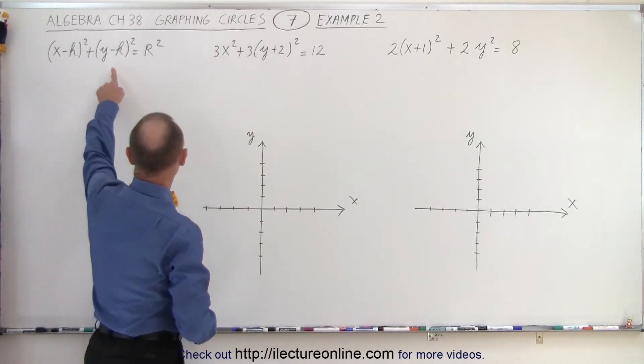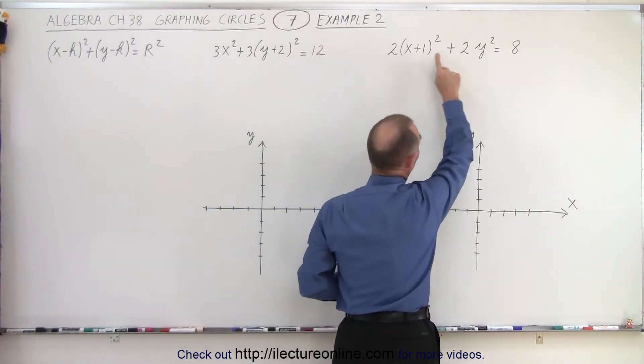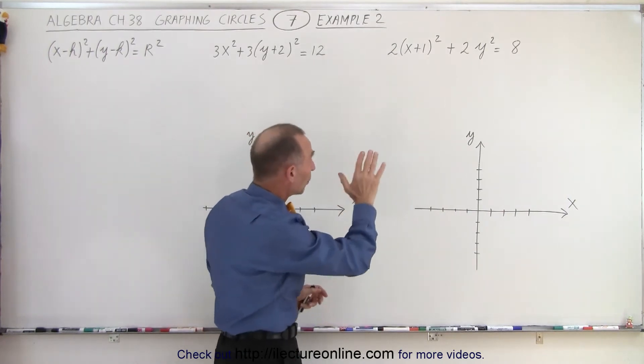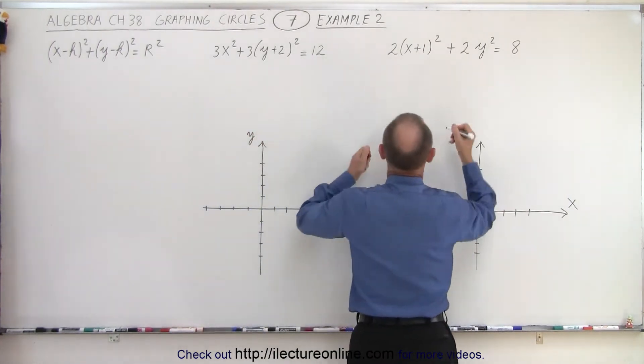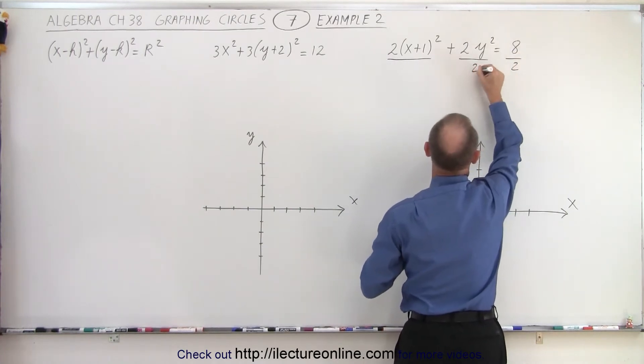Now if we want to put into the general form we want to get rid of the number 2. So we're going to divide both sides of the equation by 2 to get rid of that coefficient. So divide this by 2, divide this by 2, and divide this by 2.